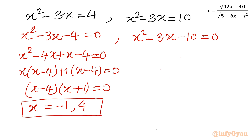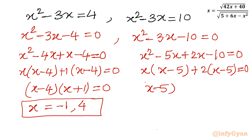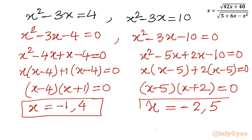Now for the second quadratic with a = 10: x² - 3x = 10, giving x² - 3x - 10 = 0. Factoring with -5x + 2x: x(x - 5) + 2(x - 5) = 0, so (x - 5)(x + 2) = 0. Therefore x = 5 or x = -2. So there are four candidate values: -1, -2, 4, and 5.